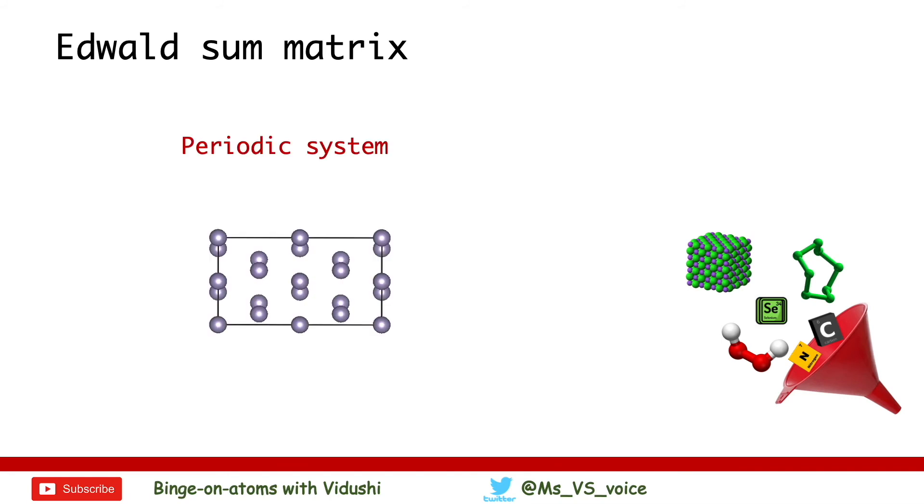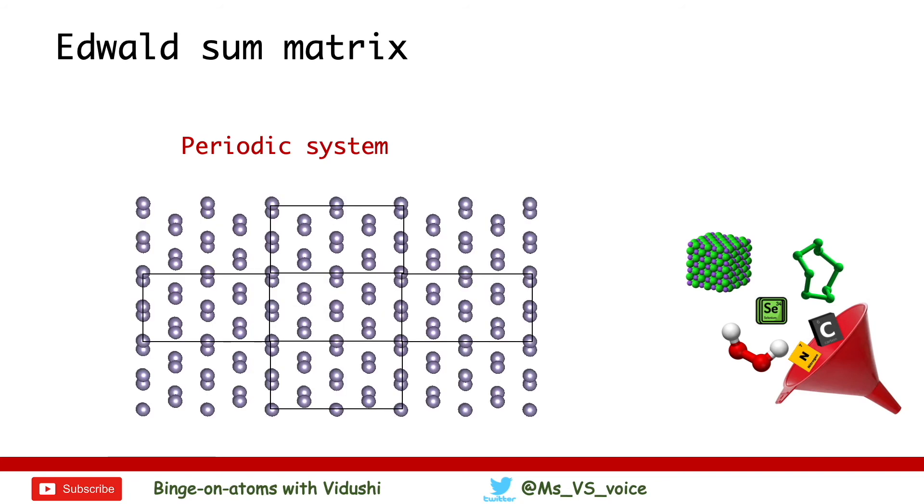Some of you may still wonder what are periodic systems. In periodic systems, each atom is infinitely repeated in three crystal lattice vector directions A, B and C.